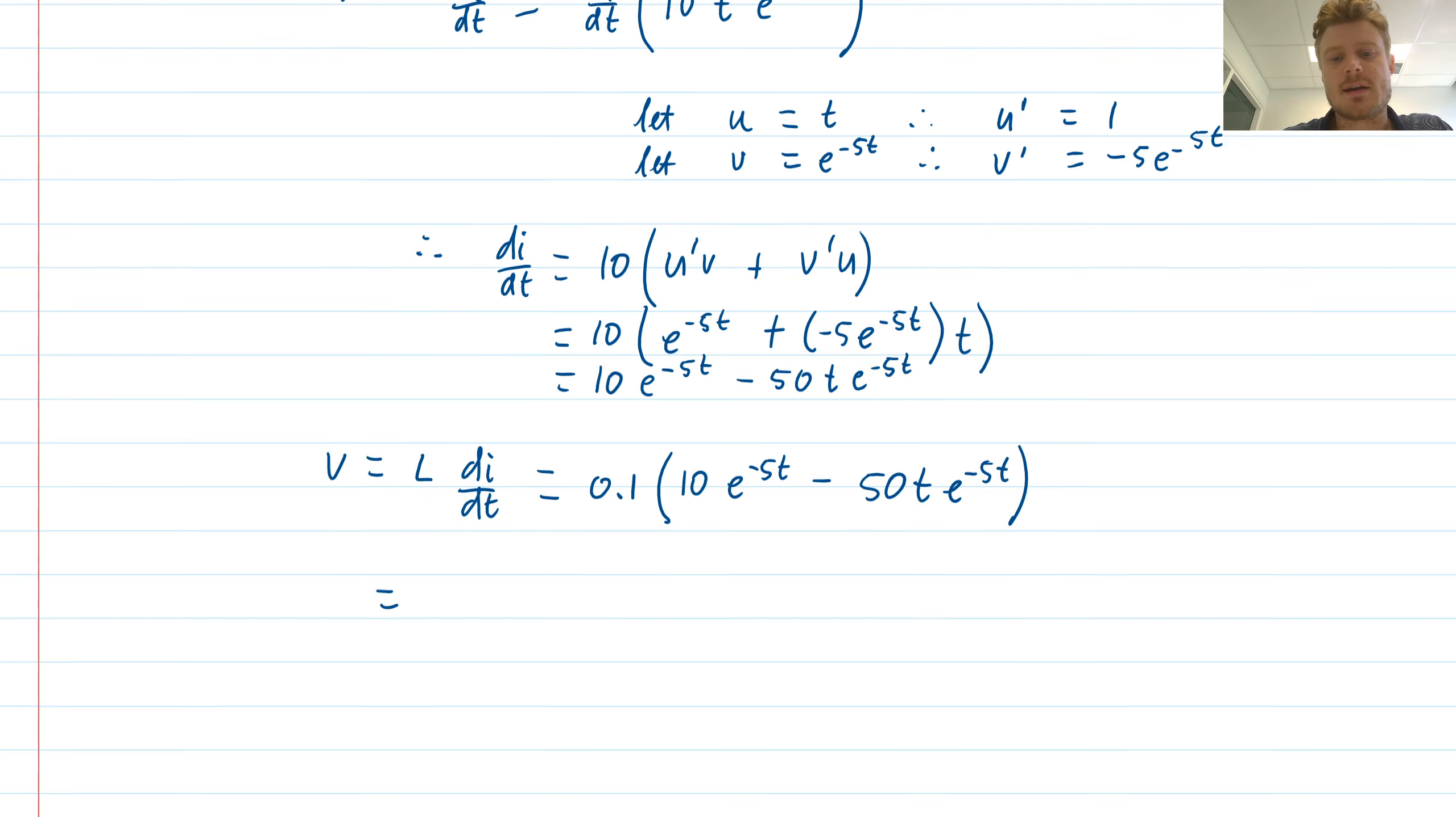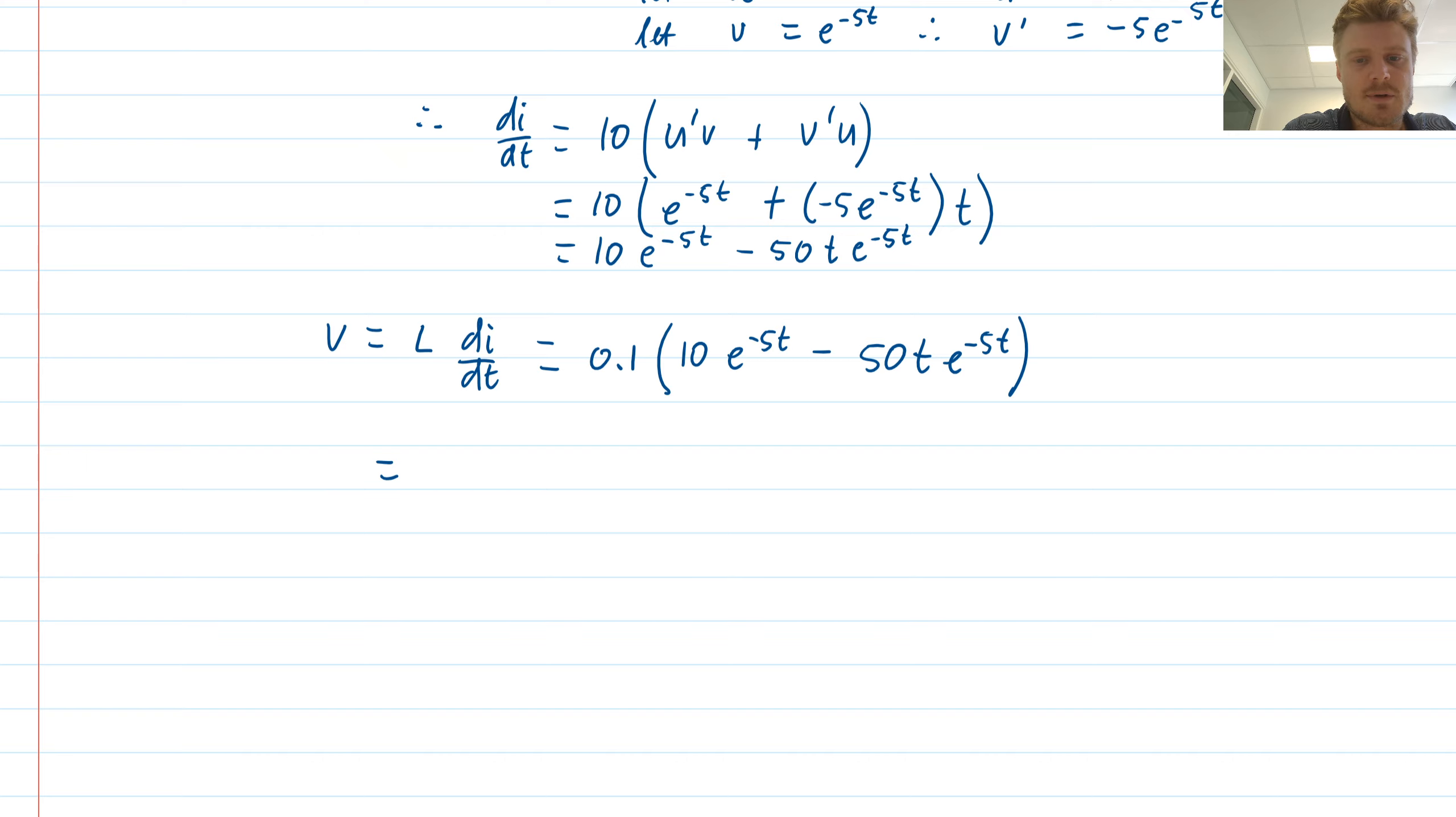We can simplify that a little bit. I'll just bring the 0.1 in, which leaves me with e to the minus 5t minus 5t e to the minus 5t, and that would have units of volts. So that's our expression for the voltage on the inductor.